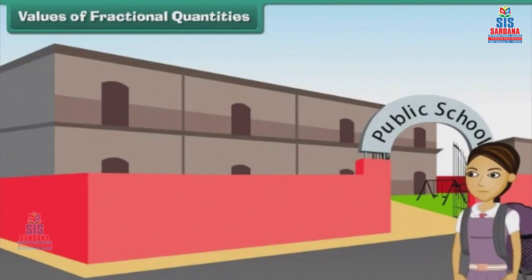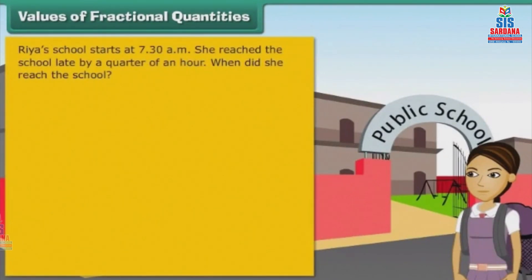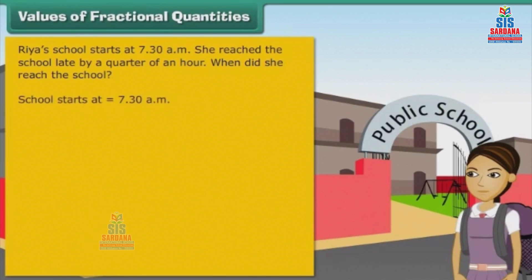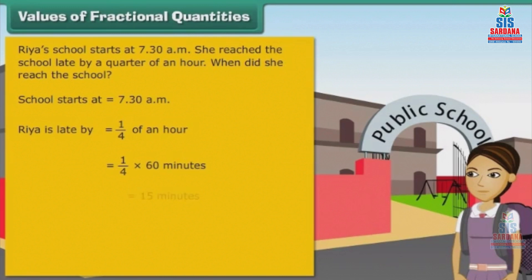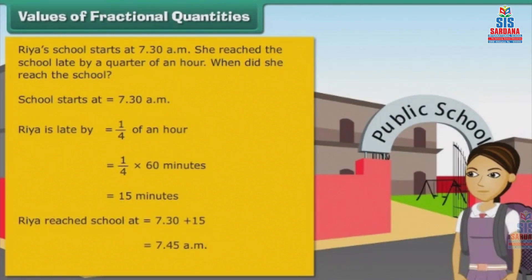Here is one more example. Ria's school starts at 7:30 am. She reached school late by a quarter of an hour. When did she reach the school? School starts at 7:30 am. Ria is late by 1 by 4 of an hour, which means 1 by 4 multiplied by 60 minutes, which is equal to 15 minutes. Ria reached school at 7:30 plus 15 minutes, which means 7:45 am.